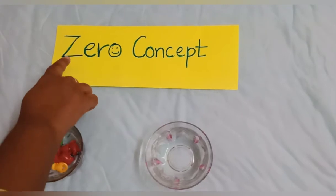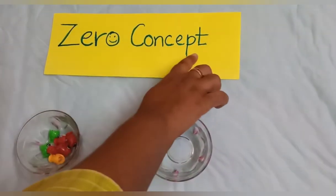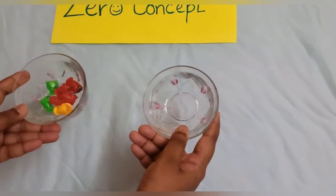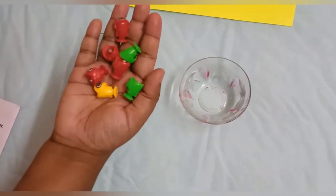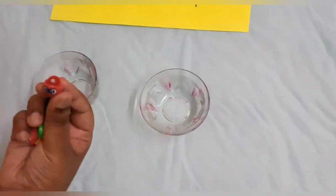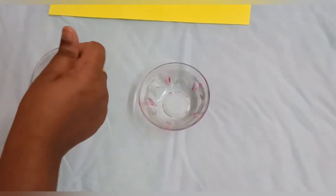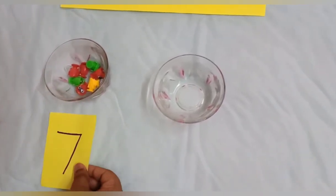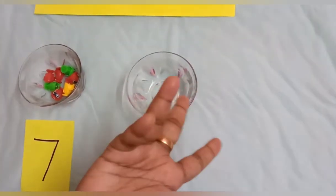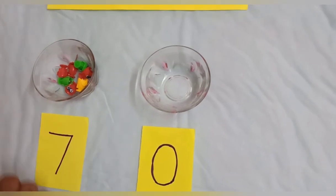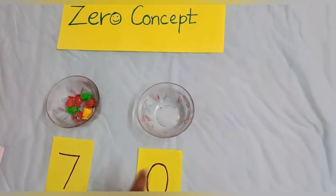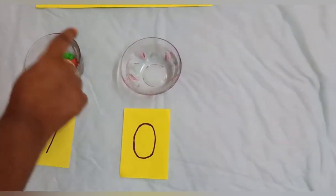Ma'am will show one more example with the fishes. Ma'am has two bowls. In one bowl, there are toy fishes — one, two, three, four, five, six, seven — seven fishes. In the other bowl, how many fishes? No fishes. No fishes means we must say zero fishes. So in this bowl, seven fishes; in this bowl, zero fishes. This is the zero concept.